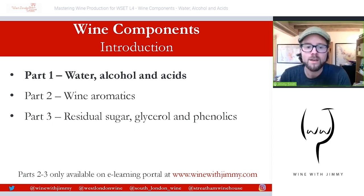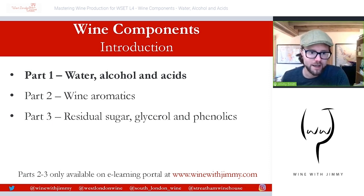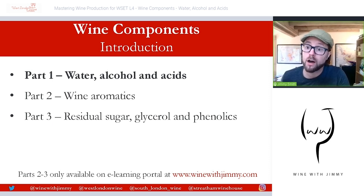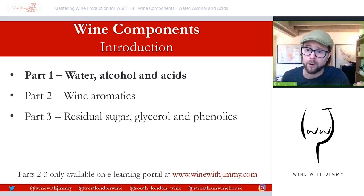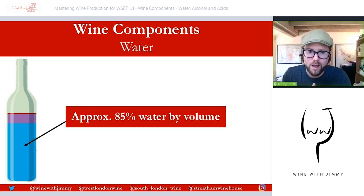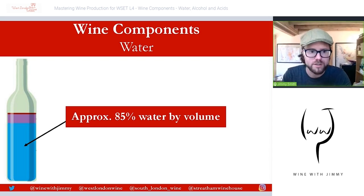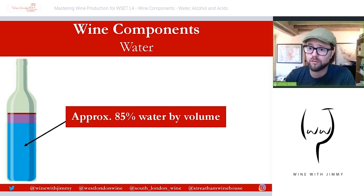Wine is made up of a complex array of compounds. Some have come directly from the grapes, others have been formed during the fermentation process, or even added during winemaking. The main groups of compounds will be discussed over these three parts. First, to get it out of the way, is water. On the left-hand side you'll see a bottle about two-thirds full, representing the key parts found within a bottle of wine.